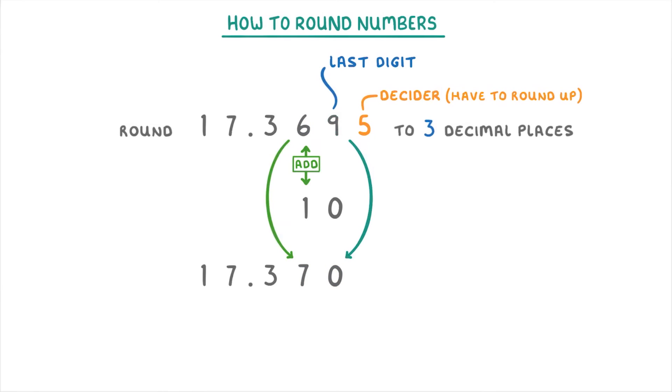The last thing to point out is that we have to keep this 0 in our answer. Because remember, we were asked to round to three decimal places. So if you just wrote 17.37 instead, then you wouldn't get all the marks, because that answer only has two decimal places.